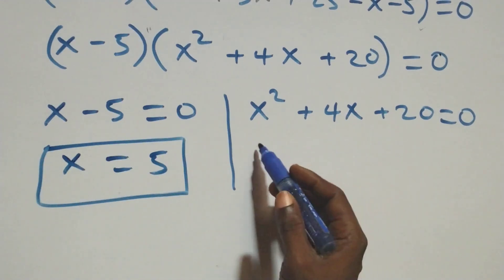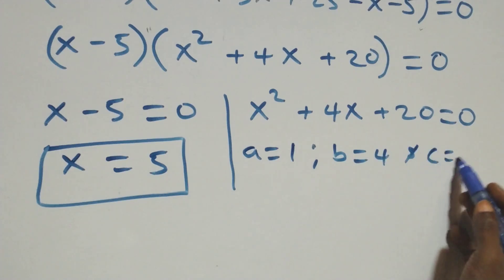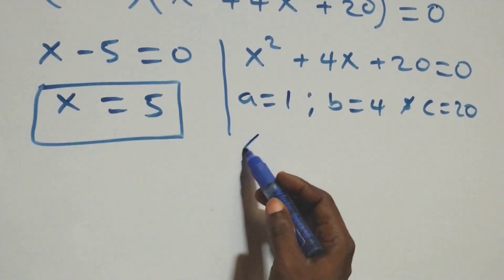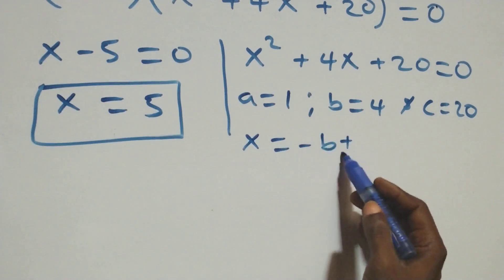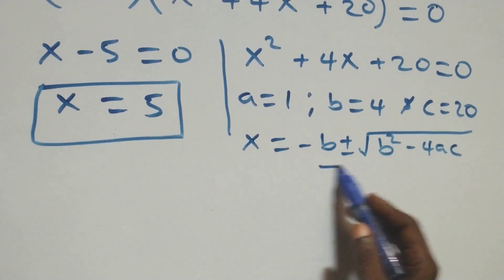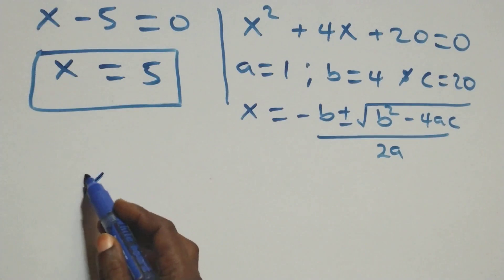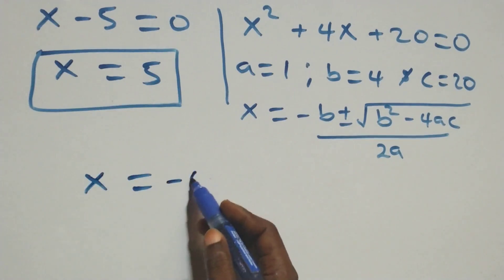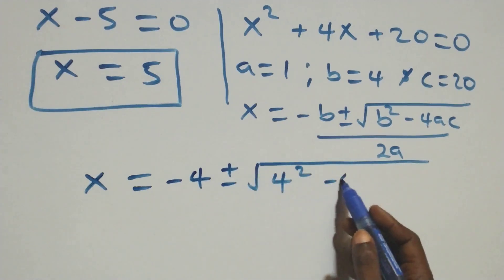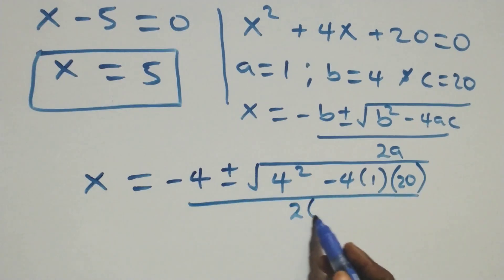For the quadratic equation, we have a equals to 1, b equals to 4, and c equals to 20. We apply the quadratic formula: x equals to minus b plus or minus square root of b square minus 4ac, all over 2a. This becomes x equals to minus 4 plus or minus square root of 4 square minus 4 times 1 times 20, over 2 times 1.